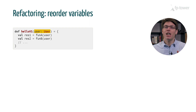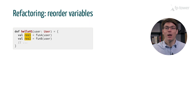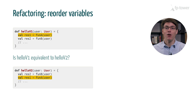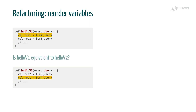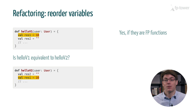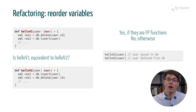Let me show you some examples. Say we have a function, hello v1, which takes a user as an input. In the body of hello v1, we call fun a and fun b, which gives us two results, res1 and res2. Can we reorder the call of fun a and fun b without changing the behavior of hello v1? Yes, we can, but only if they are FP functions. If that's the case, we know they don't perform an action and they can only return a value. For example, suppose fun a returns 10 and fun b returns the empty string — we know we can swap those two lines without affecting the program, because they are just values; they don't do anything.